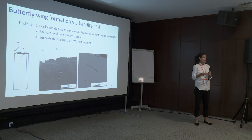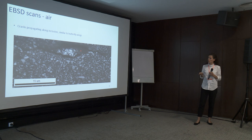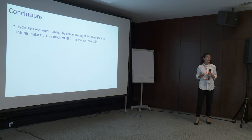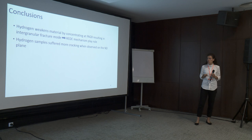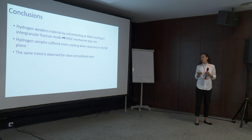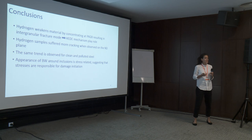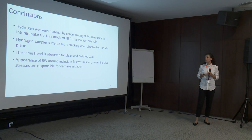In conclusion, hydrogen weakens the prior austenite grain boundaries, resulting in different fracture behavior for hydrogen-precharged samples. Hydrogen-charged samples show more cracking overall, and this trend is consistent for both clean and polluted steel. We observed formations very similar to butterfly wings in bearing steel, and I would argue this is stress-related — particularly in bearings through rolling contact fatigue and the subsurface stresses, which are highest subsurface, and that is probably the reason why this damage initiates in the material.